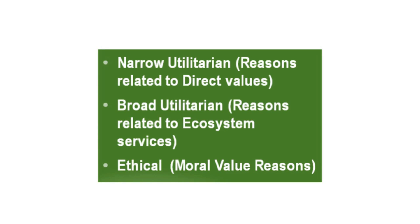Narrow Utilitarian means that we are directly related to humans — for example, food from plants and animals. Broadly Utilitarian means ecosystem-level benefits, and the third category covers ethical and moral reasons.